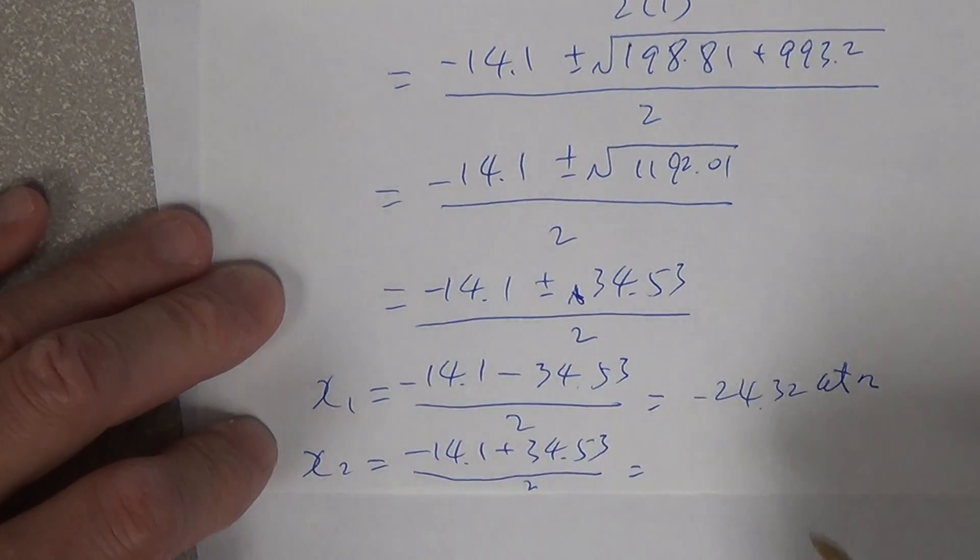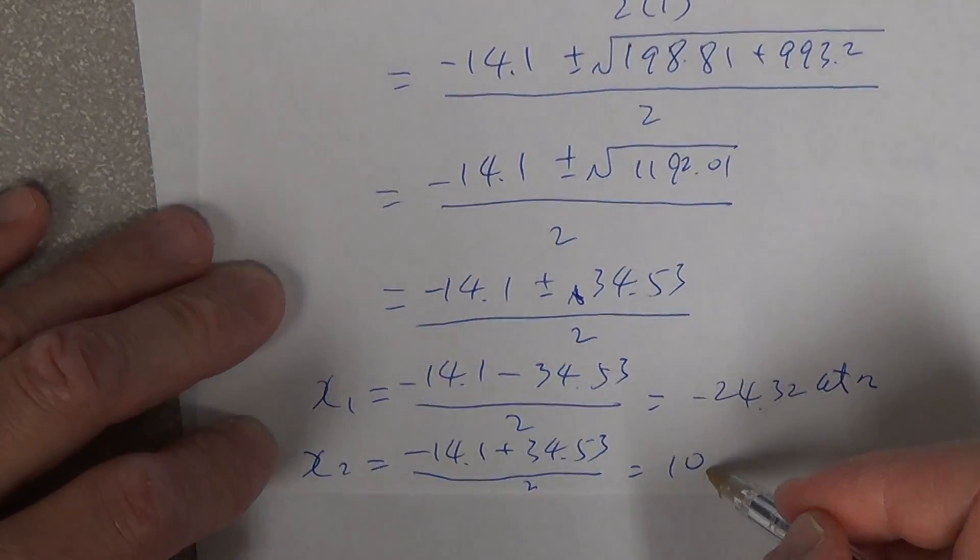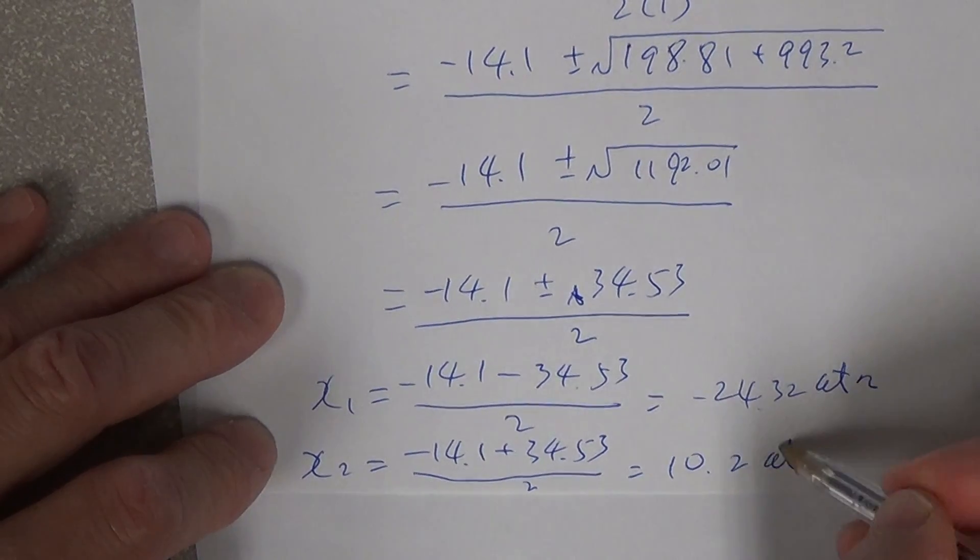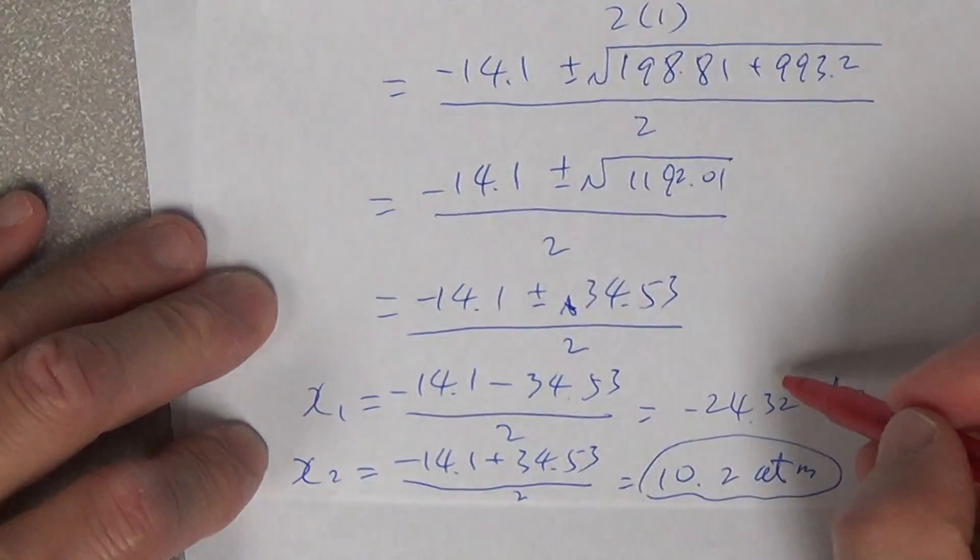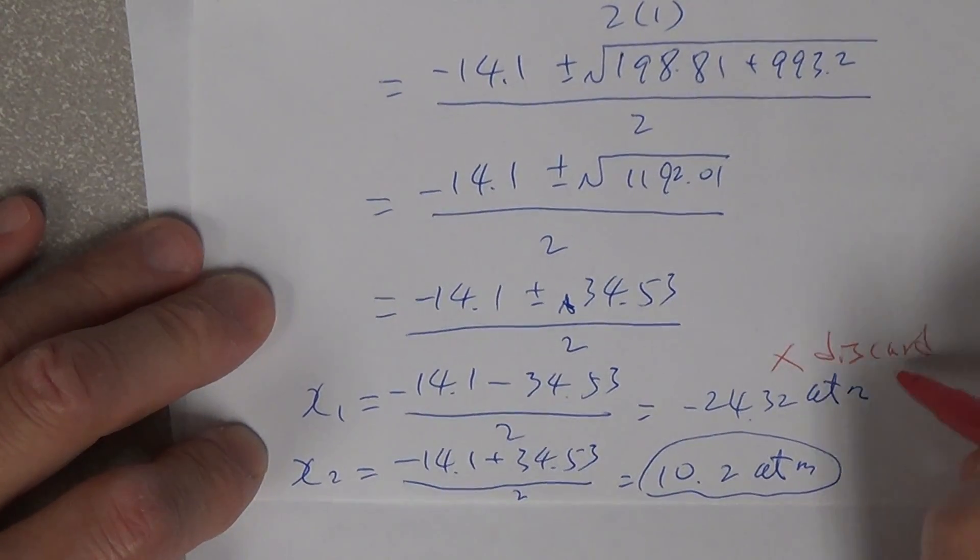So that gives 10.2 atm. Okay? So again, we will discard this one because there is no negative change.